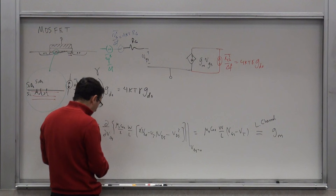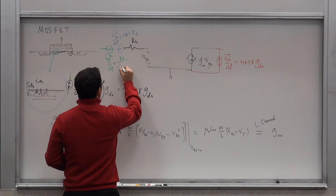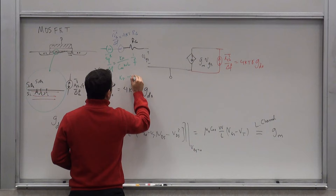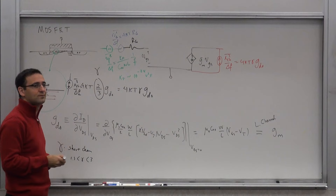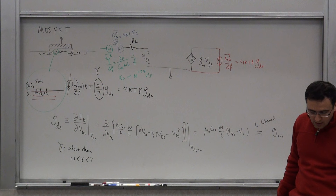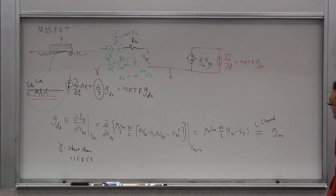The flicker noise in a MOSFET can be modeled as V_x²/Δf = K_F / (C_ox · W · L) × (1/f), where K_F is on the order of 10⁻²⁴ V²·F — though it can be larger or smaller. The total gate oxide capacitance C_ox·W·L appears in the denominator. Those are the primary noise sources in a MOSFET — channel thermal noise, gate resistance thermal noise, and flicker noise.